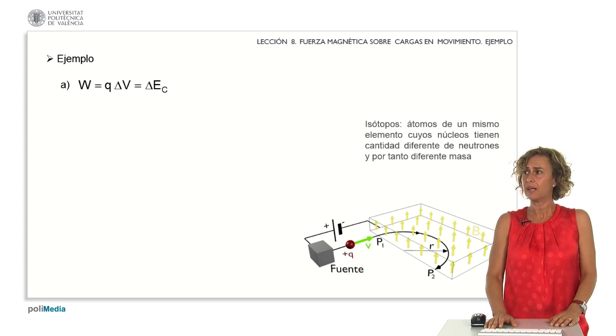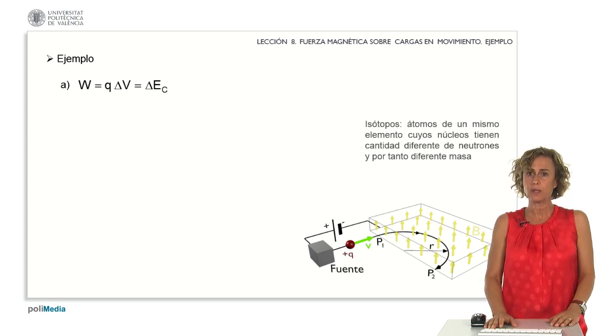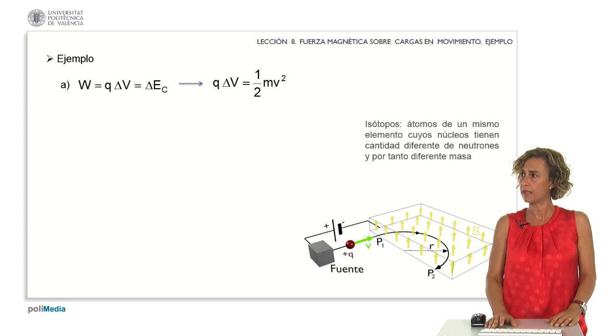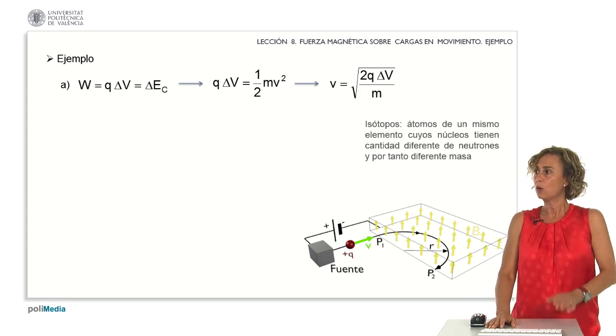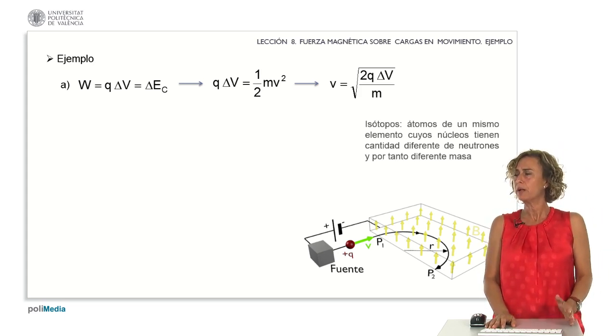Work equates to the product of charge and potential difference, and simultaneously equals the change in kinetic energy. Considering the expression for kinetic energy, we can isolate the velocity from the obtained expression. It's evident that the velocity is a function of the charge, the potential difference, and the mass. Therefore, using this approach, we can determine the velocity.